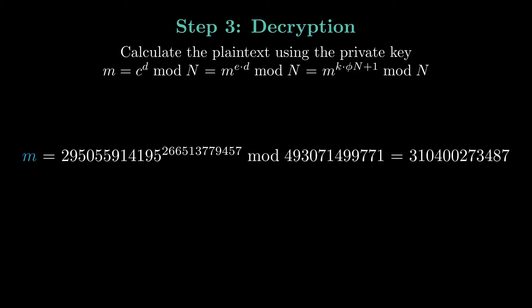substituting this into the decryption equation, we get c raised to the power of d modulo n equals m raised to the power of e times d modulo n, and we have e times d is equal to k times φ(n) plus 1. Then we use Euler's theorem to simplify the equation to m.